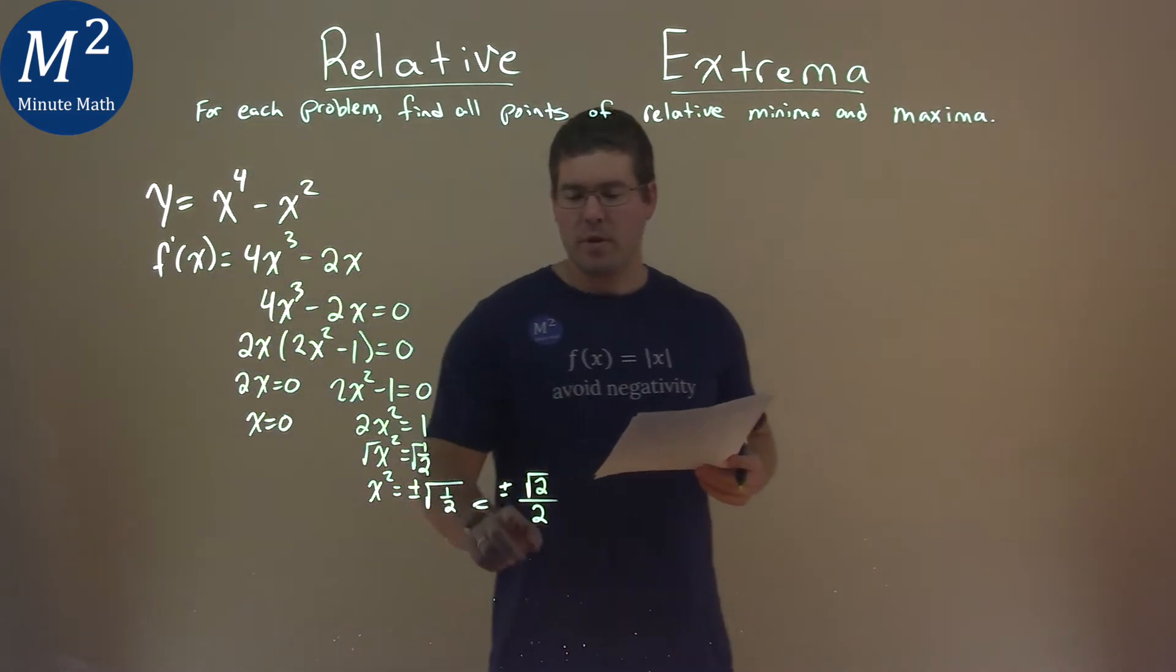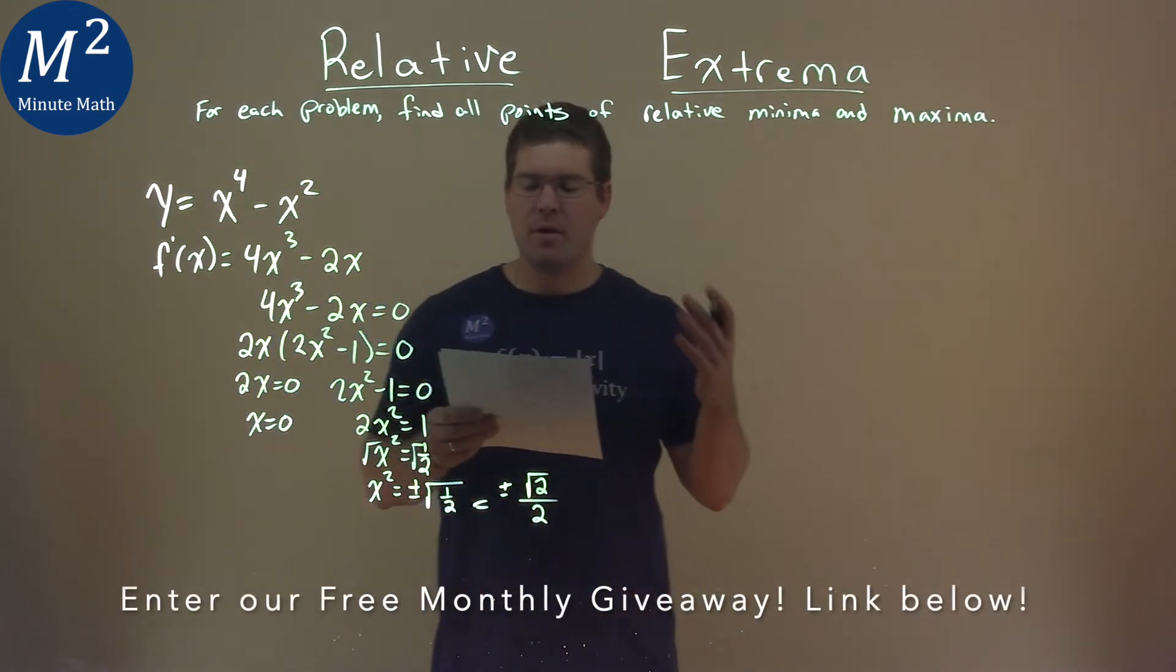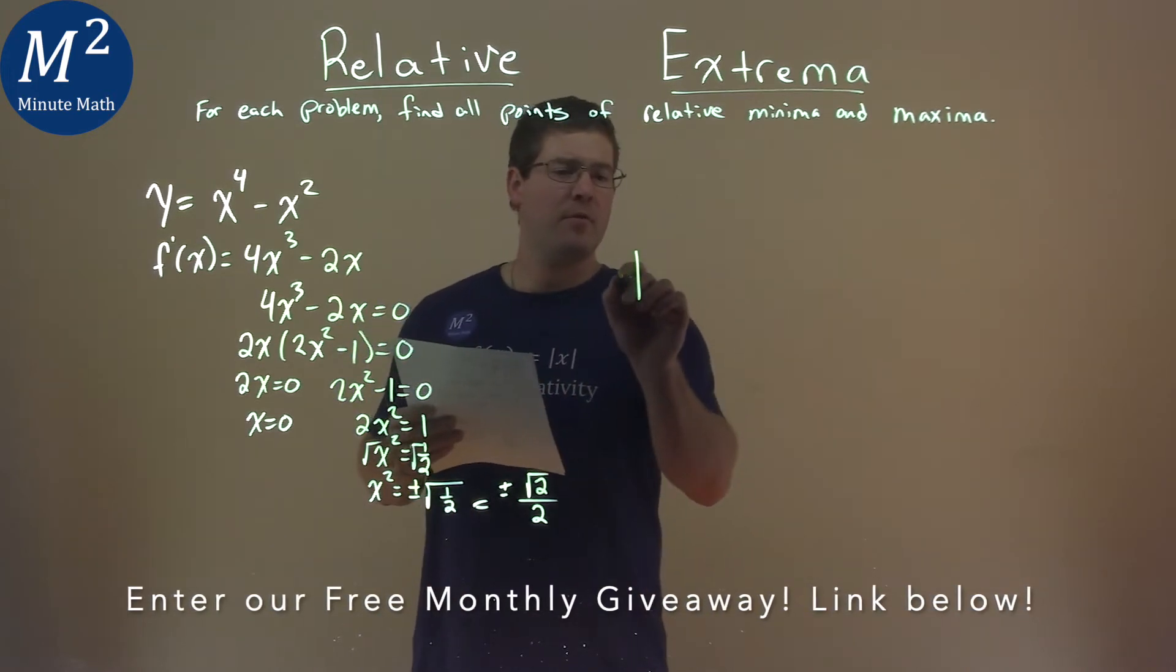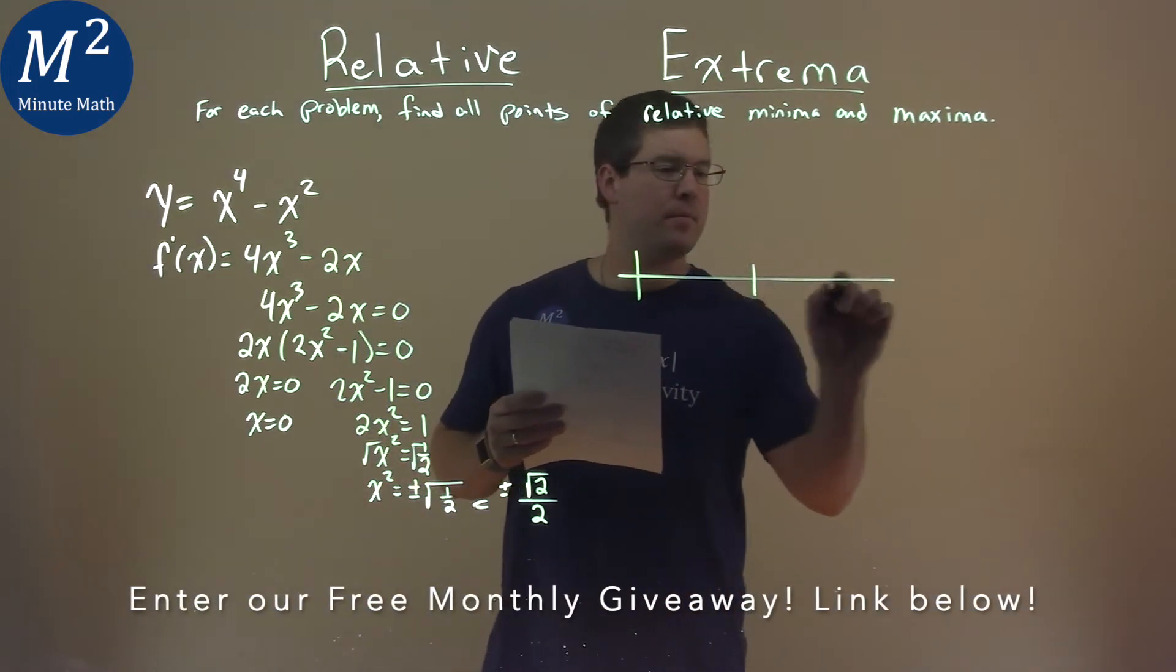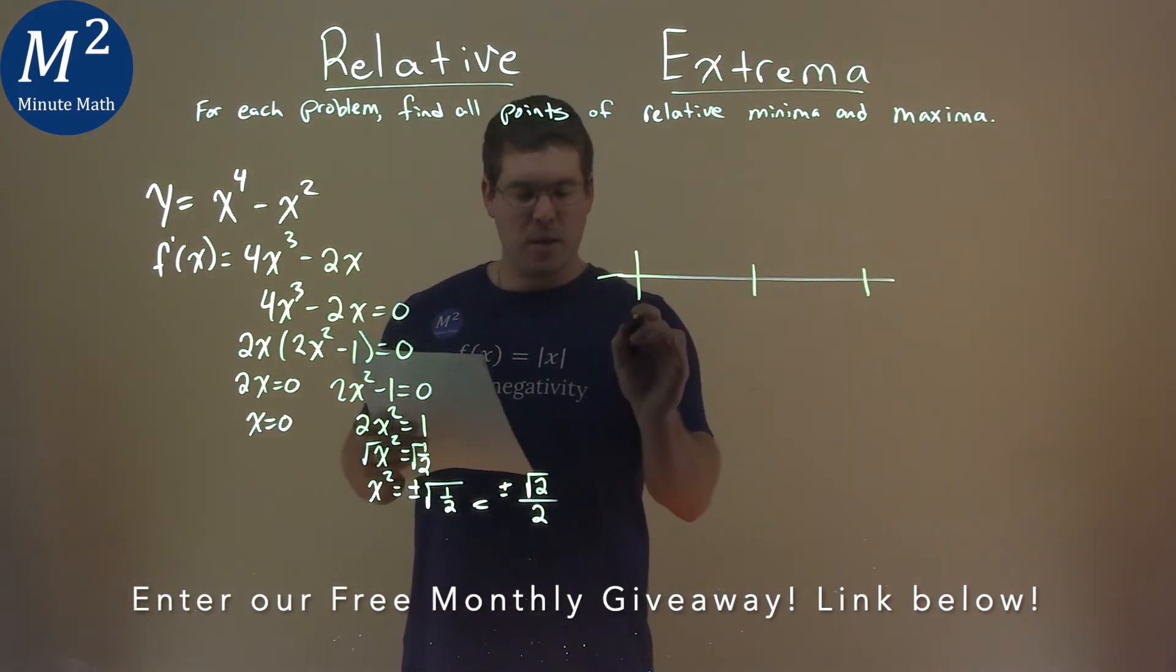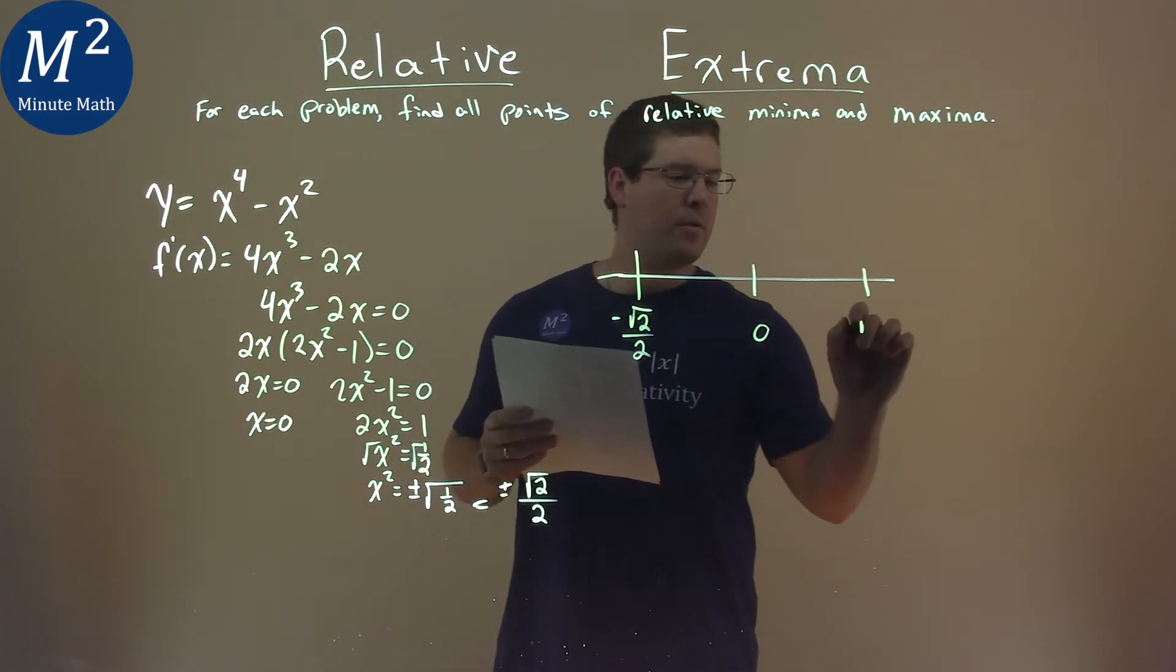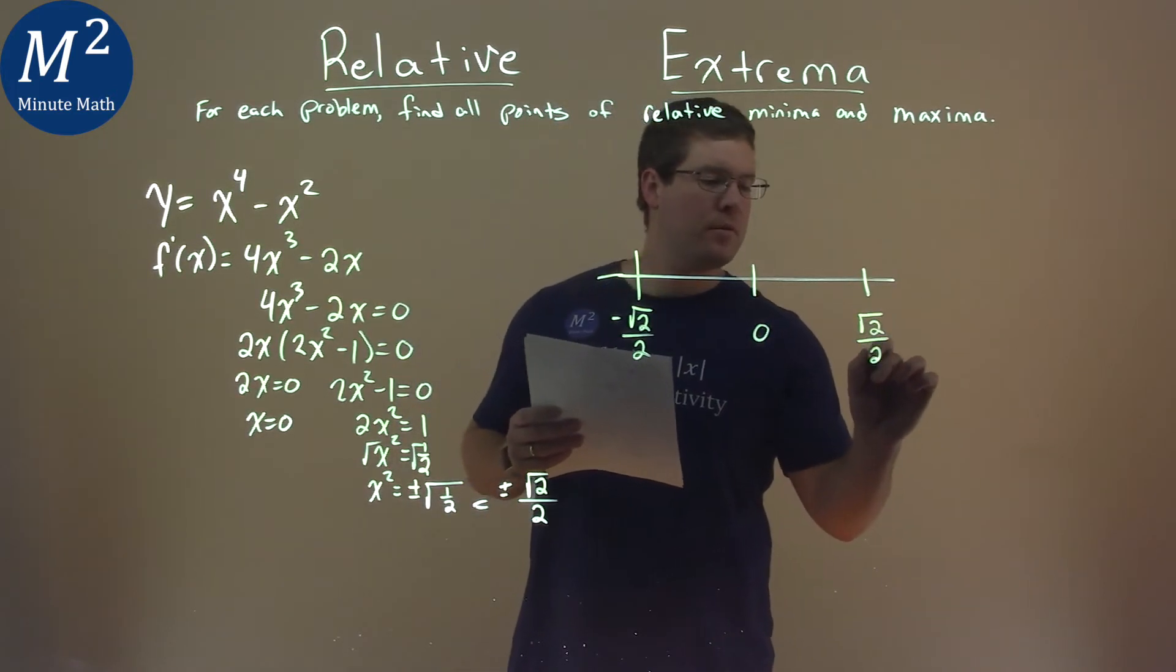So we have our critical points, three of them, and we need to use our chart for the first derivative test. So I make my little first derivative test here. Lowest value is negative square root of 2 over 2, you have zero here, and then square root of 2 over 2.